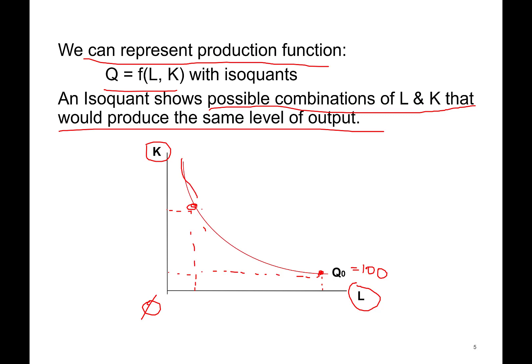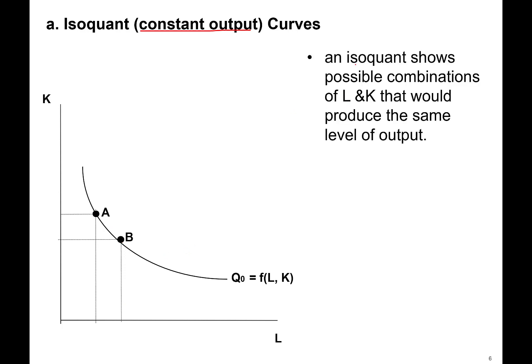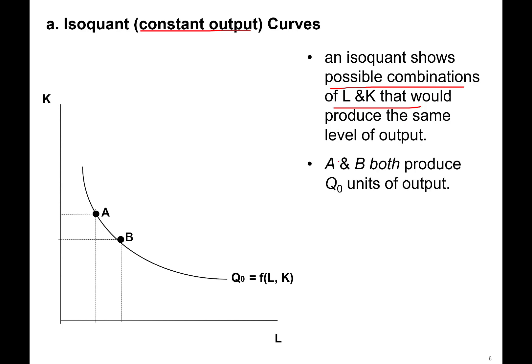So over this curve, I'm producing exactly 100 units. ISO means equal, and quant is quantity — so you're producing the same quantity. These are constant output curves. At point A, I'm using more capital and less labor; at point B, I'm using less capital and more labor — but I'm still producing the same level of output. A and B both produce Q0, let's say 5,000 units of cookies per day from a bakery.